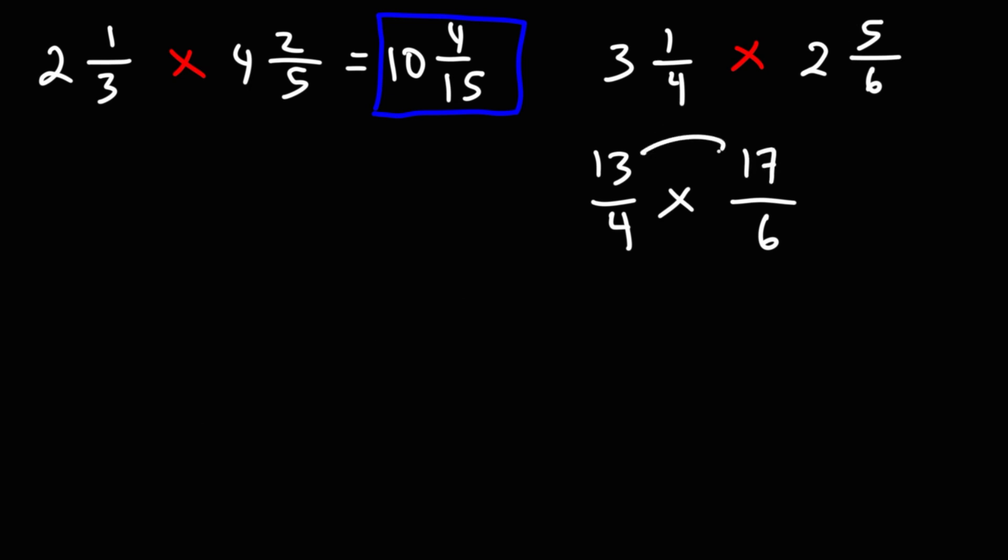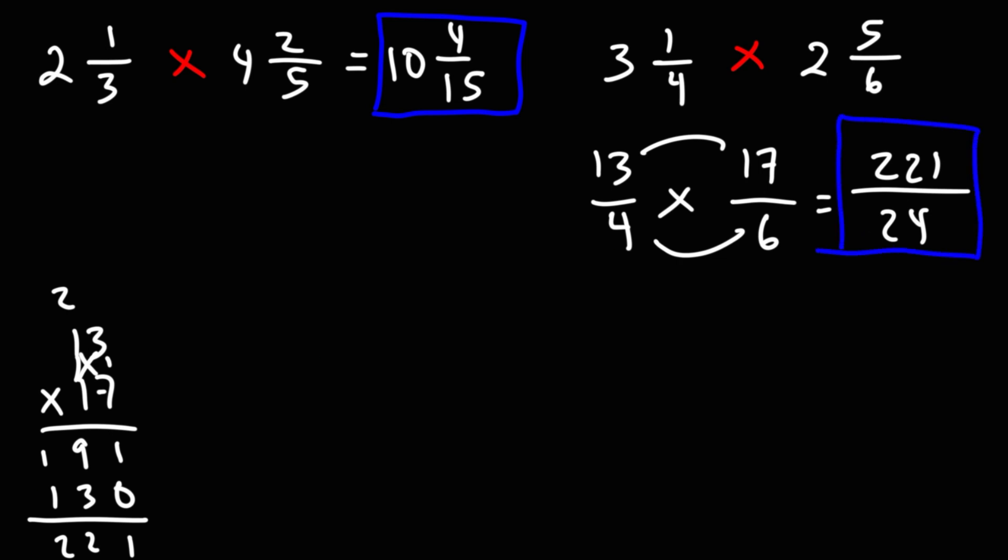So now let's multiply across. So 13 times 17. We got 7 times 3 which is 21, we'll write the 1, carry over the 2. 7 times 1 is 7, plus 2, that's 9. Write a 0. 1 times 3 is 3, 1 times 1 is 1. Add: we get 1, 3 plus 9 is 12, carry over the 1, 1 plus 1 is 2. So 13 times 17 is 221. 4 times 6 is 24. So the answer as an improper fraction is 221 over 24.